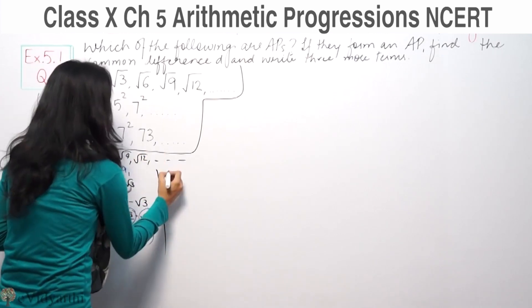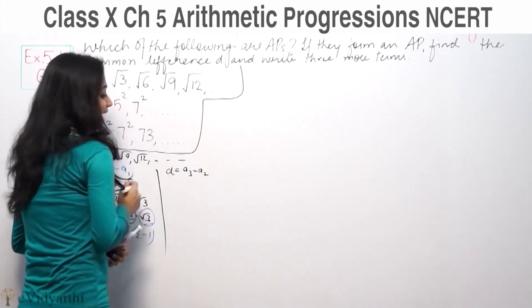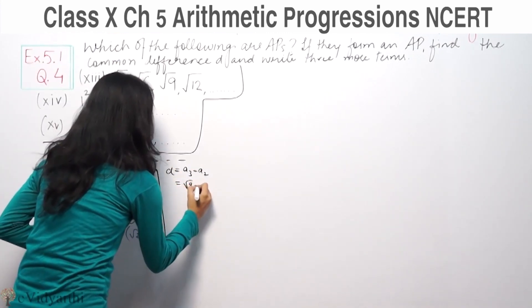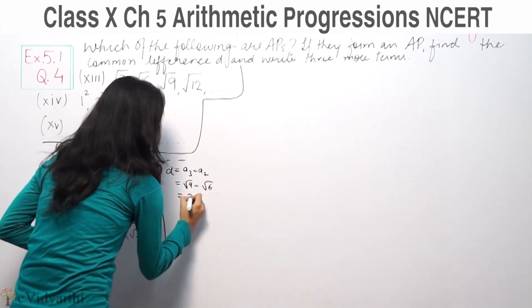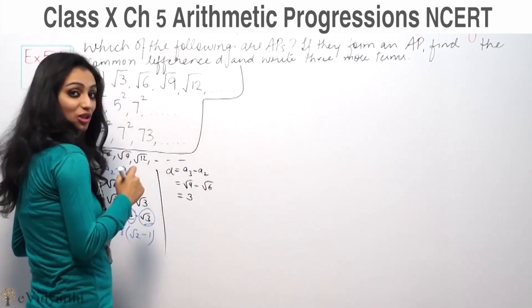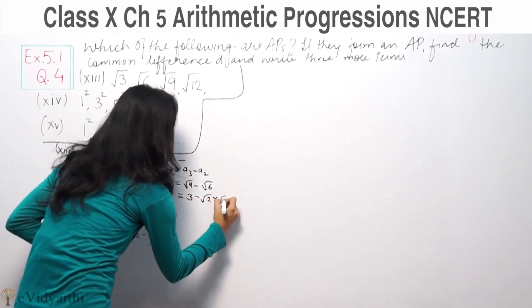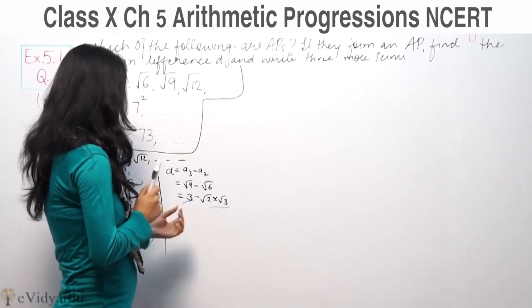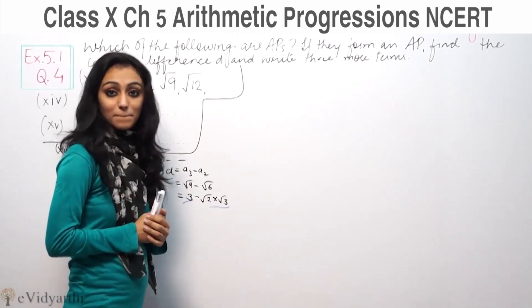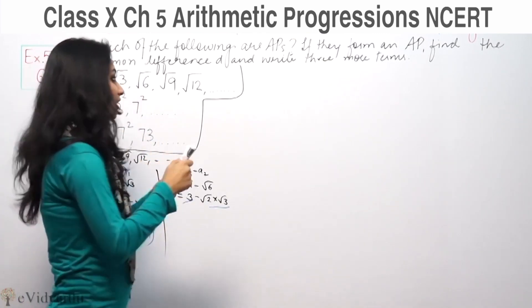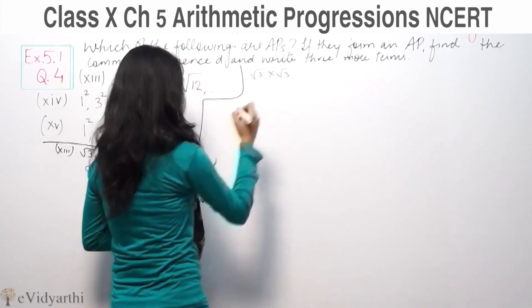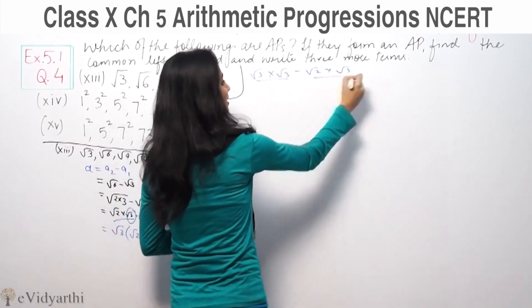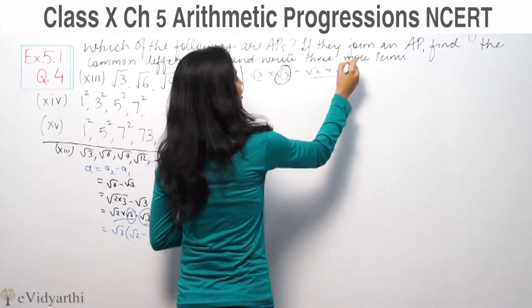Same way, we will check the next two terms, which is A3 minus A2. Third term minus second term. Third term is root 9, second term is root 6. Root 9 is 3. And root 6 is root 2 into root 3. What is common in these two terms?